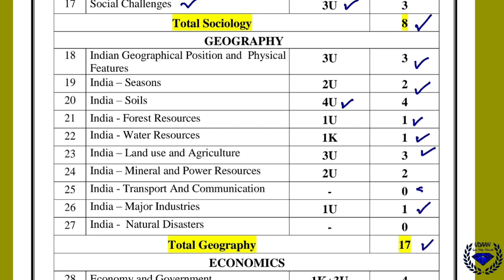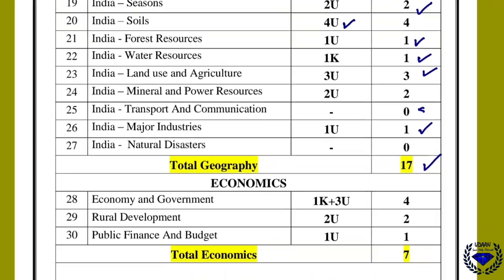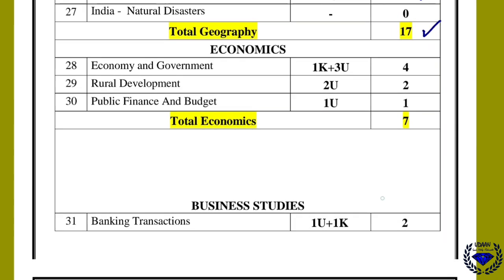In economics, economy and government has one objective and a three-mark question — total four marks. Rural development has a two-mark question. Public finance and budget has one mark. Total seven marks can be expected from economics.